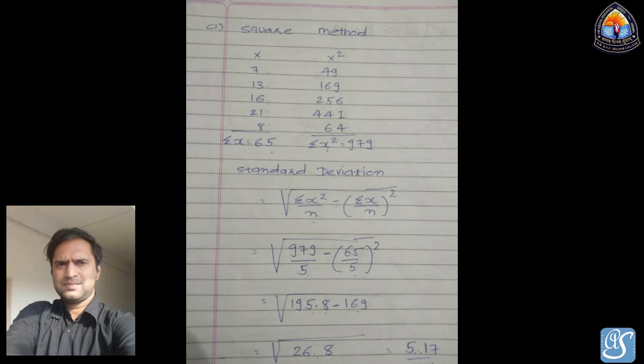The first method is the square method. We square each value of x: 7² = 49, 13² = 169, 16² = 256, 21² = 441, 8² = 64. So Σx = 65 and Σx² = 49 + 169 + 256 + 441 + 64 = 979. The standard deviation formula is √(Σx²/n − (Σx/n)²) = √(979/5 − (65/5)²) = √(195.8 − 169) = √26.8 = 5.17.